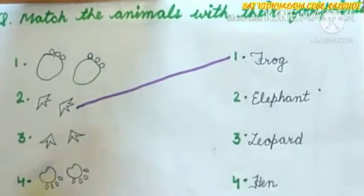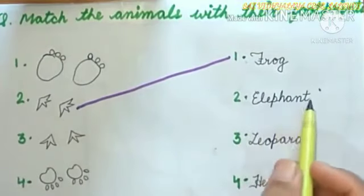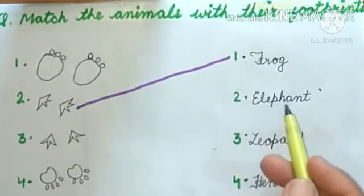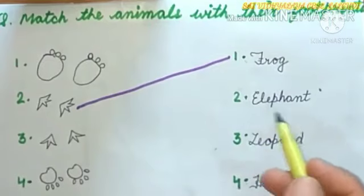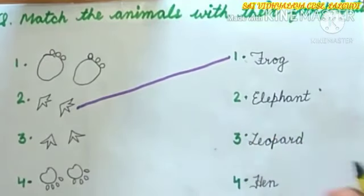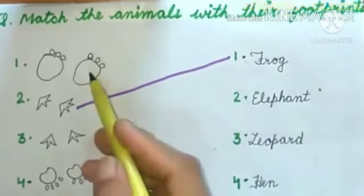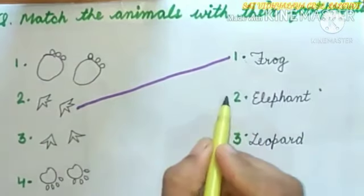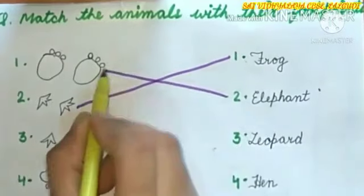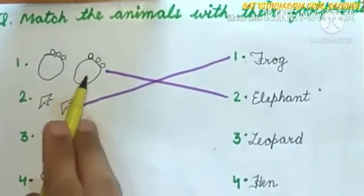Next, we have Elephant. Elephant is very big animal, yes? So, its footprint is so big. Which one is very big in size? Yes, this one. So, match this. This is the footprint of an elephant.